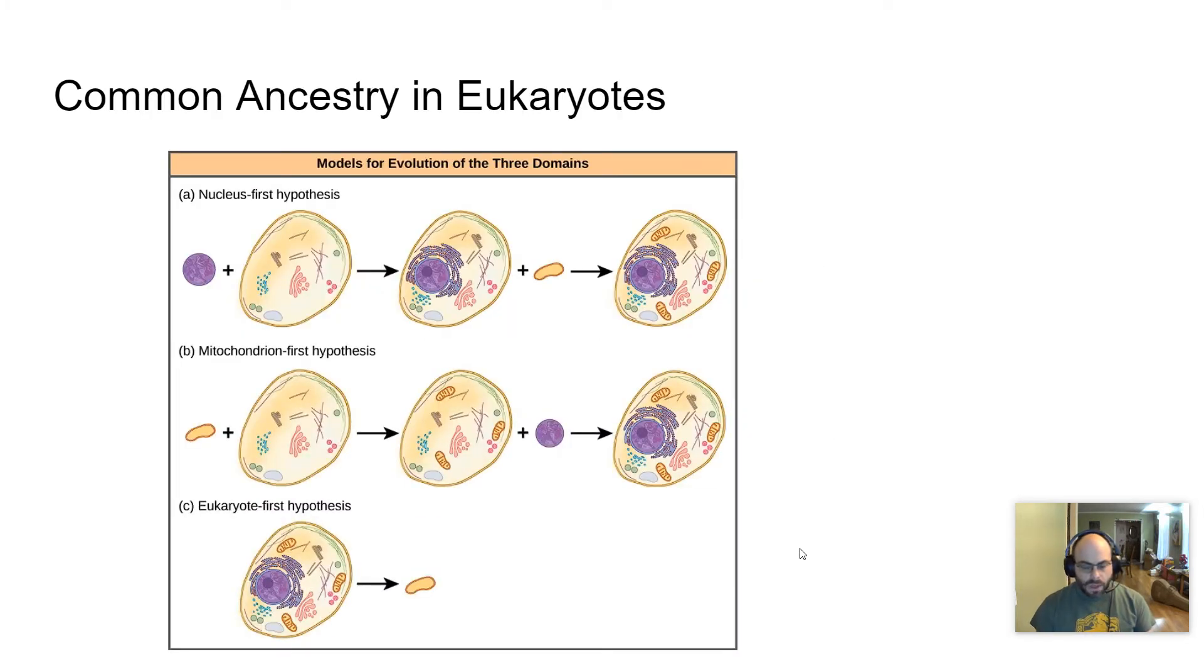And so we're going to look at the structural evidence of ancestry in eukaryotic cells. There are three things that we're going to focus on in this lecture: the evidence found in membrane-bound organelles, the evidence found in the fact that all eukaryotic organisms have linear chromosomes, and that their genes contain introns.